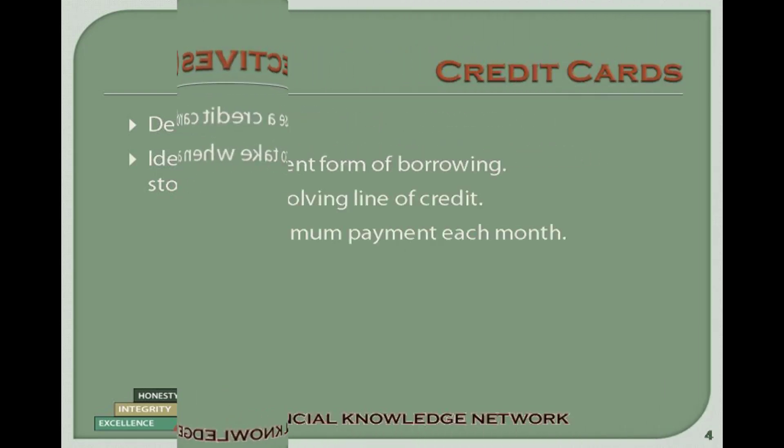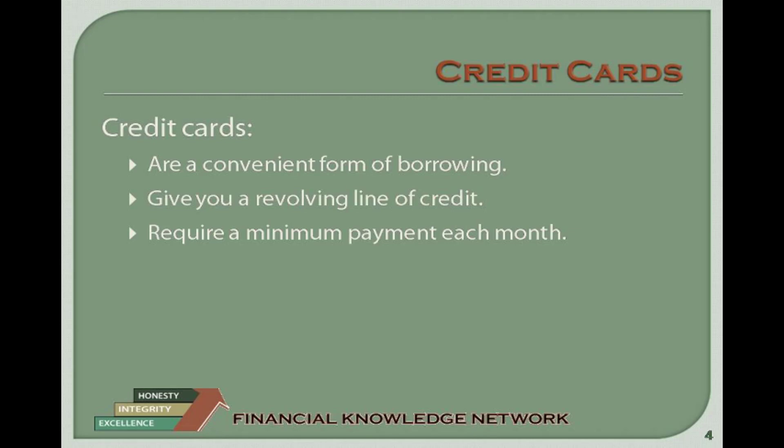Credit cards represent a convenient form of borrowing. You are given a credit line for a certain amount, and you can access this balance to purchase things whenever you want. When you pay this balance off, you then have access to the credit limit available — this is called revolving credit. To maintain a revolving account, you will be required to make a minimum payment every month. Any part of the amount owing that is not paid will be charged interest, which will be added to your next payment.